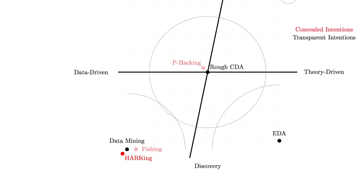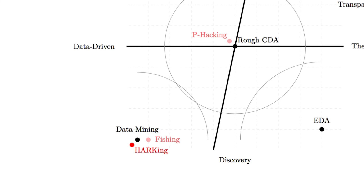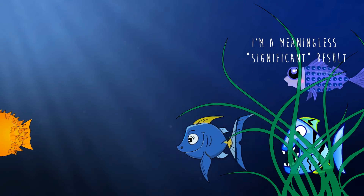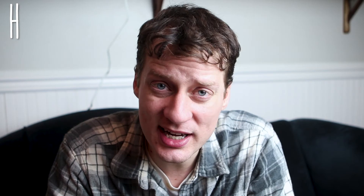In the bottom left, high on discovery and high on data-driven, the ethical approach is data mining — you input your data into a computer and it finds interesting patterns for you. But we also have fishing and HARKing. Fishing means you have 20 tests, run them all, and only report those that are significant. HARKing adds a layer of deception: you run 20 tests, report only significant ones, and then retroactively write your hypothesis as if that's exactly what you predicted. HARKing stands for Hypothesizing After Results are Known — a big no-no.